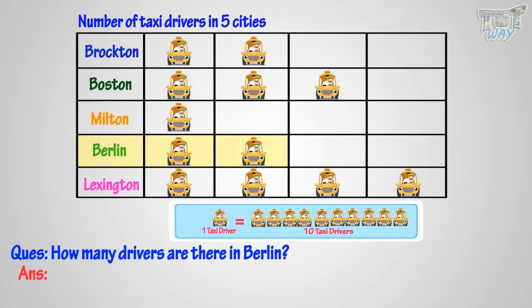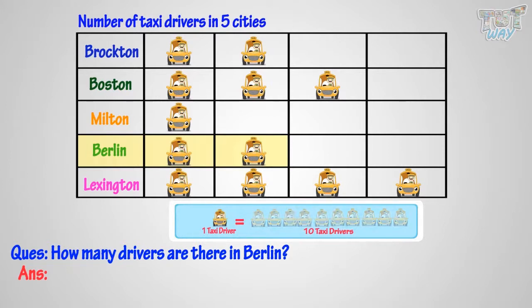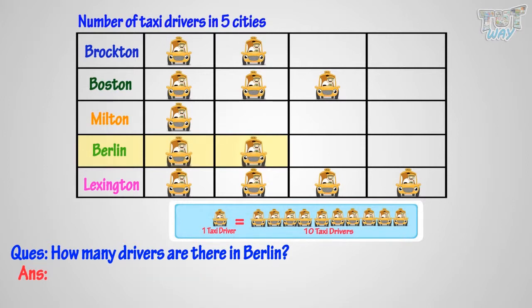How many drivers are there in Berlin? There are two driver symbols against Berlin, where one symbol means ten drivers. So, ten plus ten, or ten times two, equals twenty. There are twenty drivers in Berlin.